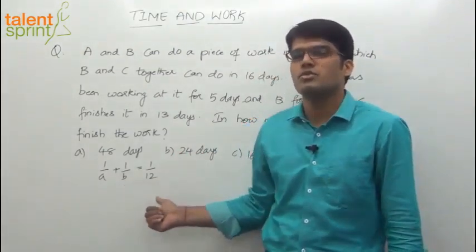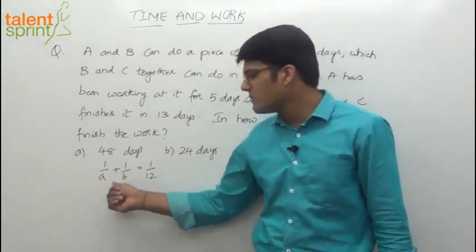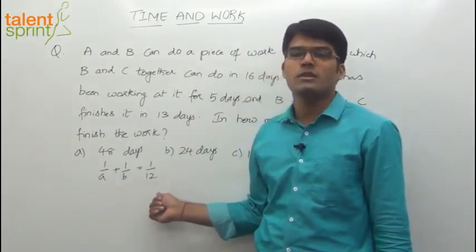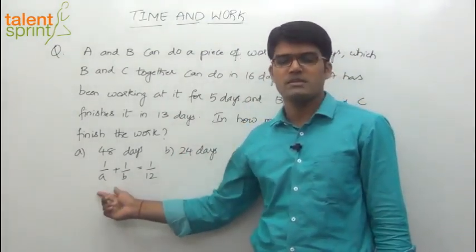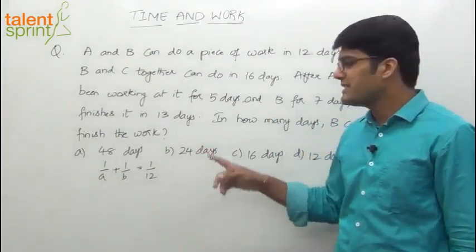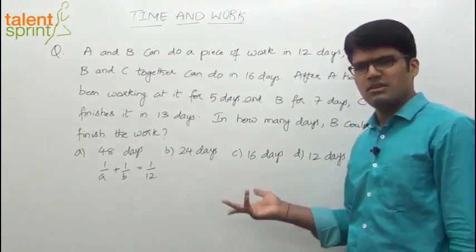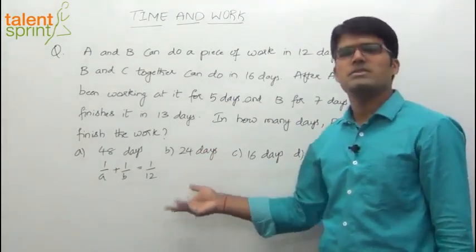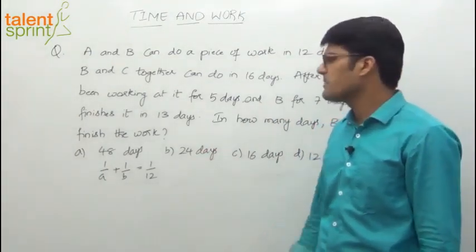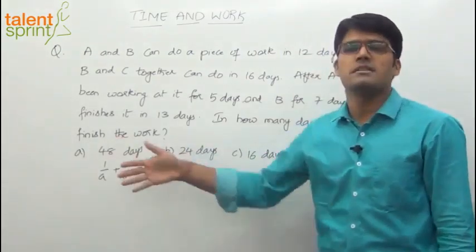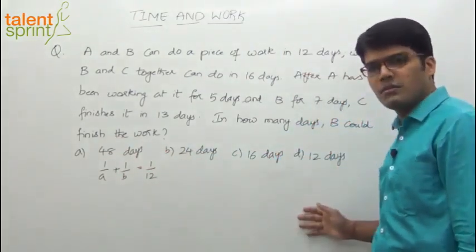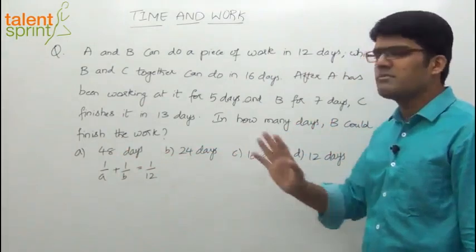A and B can do a piece of work in 12 days. A's 1 day work plus B's 1 day work equals 1 twelfth of the total work. Otherwise, we can say total work W equals A plus B into 12. Any one of these equation types can be used for solving such questions. Write one simple equation and simplify to get the answer.